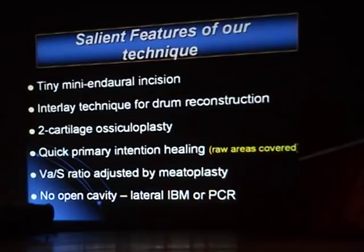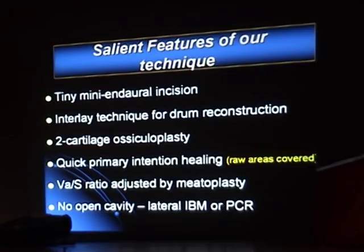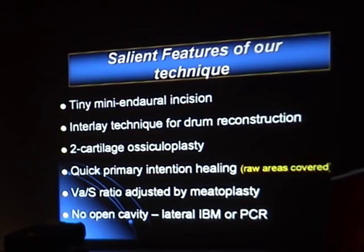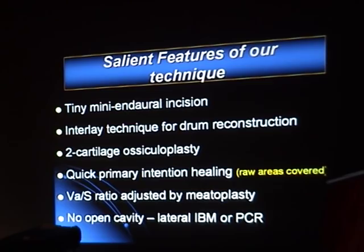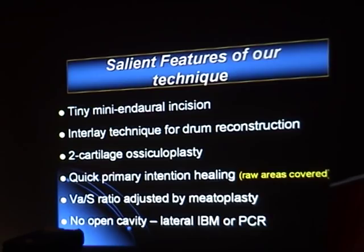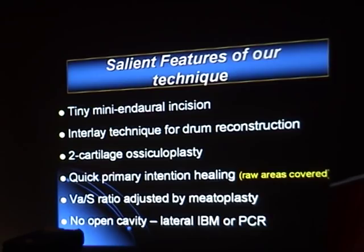Salient features of the technique: mini-endaural incision just half a centimeter above the tragus; interlay technique for drum reconstruction; two-cartilage ossiculoplasty; quick primary intention healing because raw areas are covered; VA upon S ratio adjusted by meatoplasty; and no open cavity — either lateral IBM or posterior canal reconstruction.